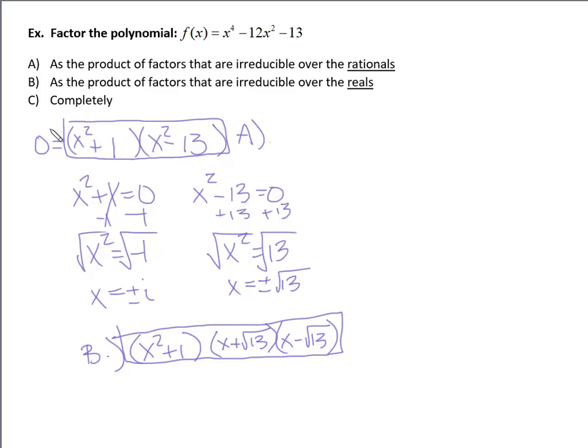And then c is to finish factoring completely. And that means we can use all of the zeros. To just write all of those linear factors. So x plus i. x minus i. Those conjugates. And then x plus root 13. And x minus root 13. So if you get all the way to these linear factors. That would be like as completely factored out as you can.